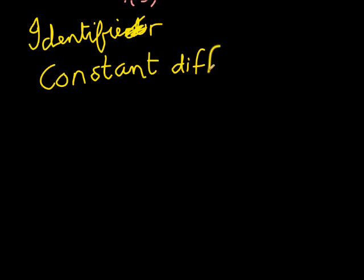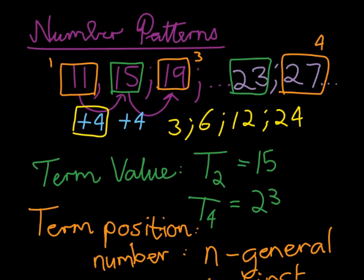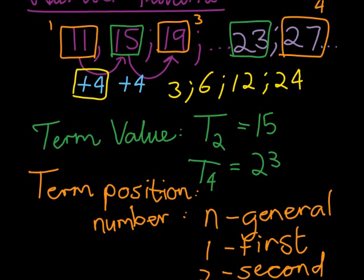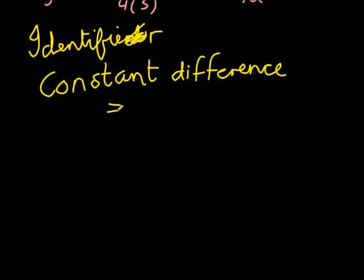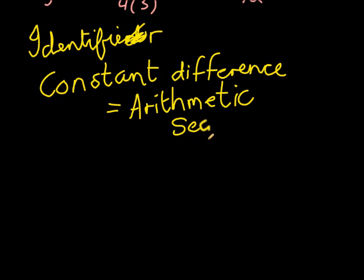The first is constant difference. If I take two consecutive terms and subtract them, like 15 minus 11 is 4, and 19 minus 15 is 4, the difference is constant. This is called an arithmetic sequence.